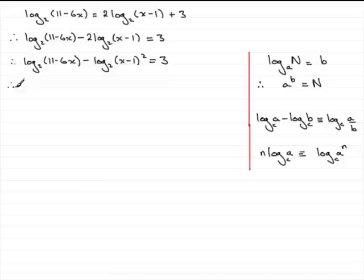So if we use that rule, this becomes the log in base 2 of 11 minus 6x all divided by x minus 1 squared, and that's equal to 3.